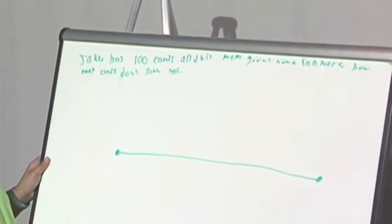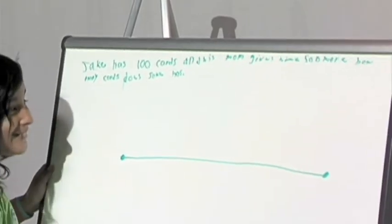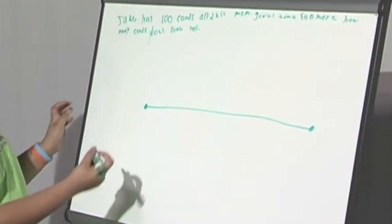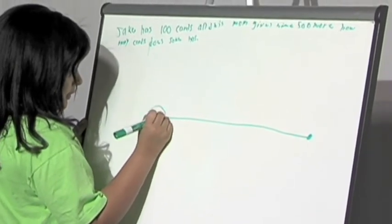So, oh, this thing is falling. So, if Jake has 100 cards, and his mom gives him 5 more, I'm going to put first 100 on the number line.